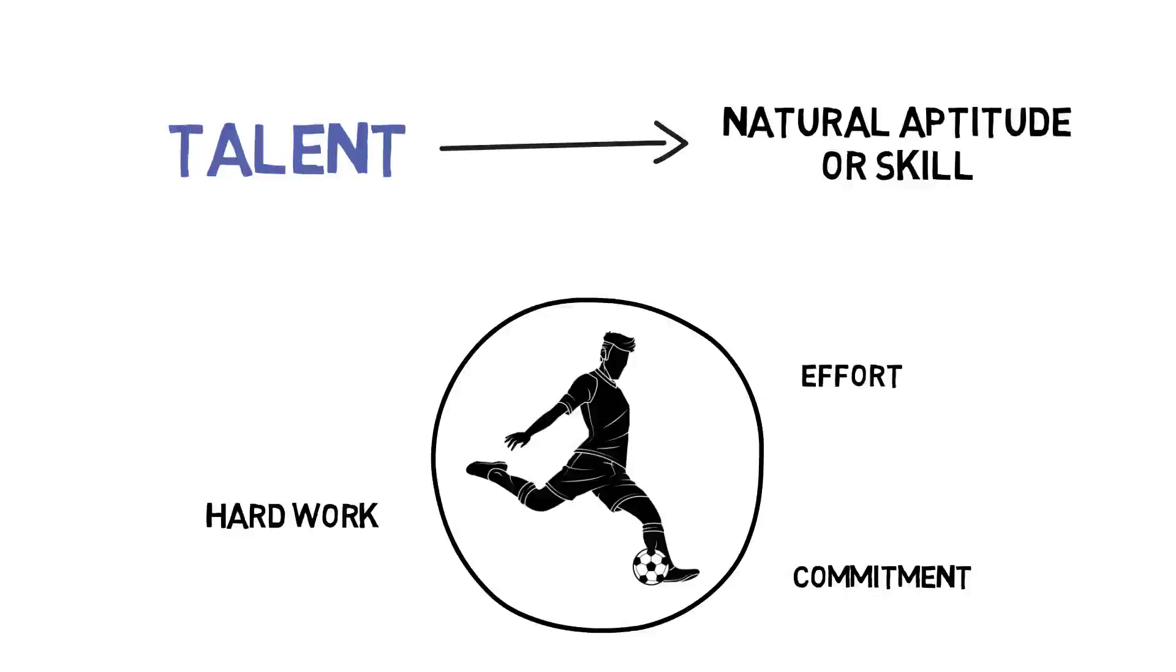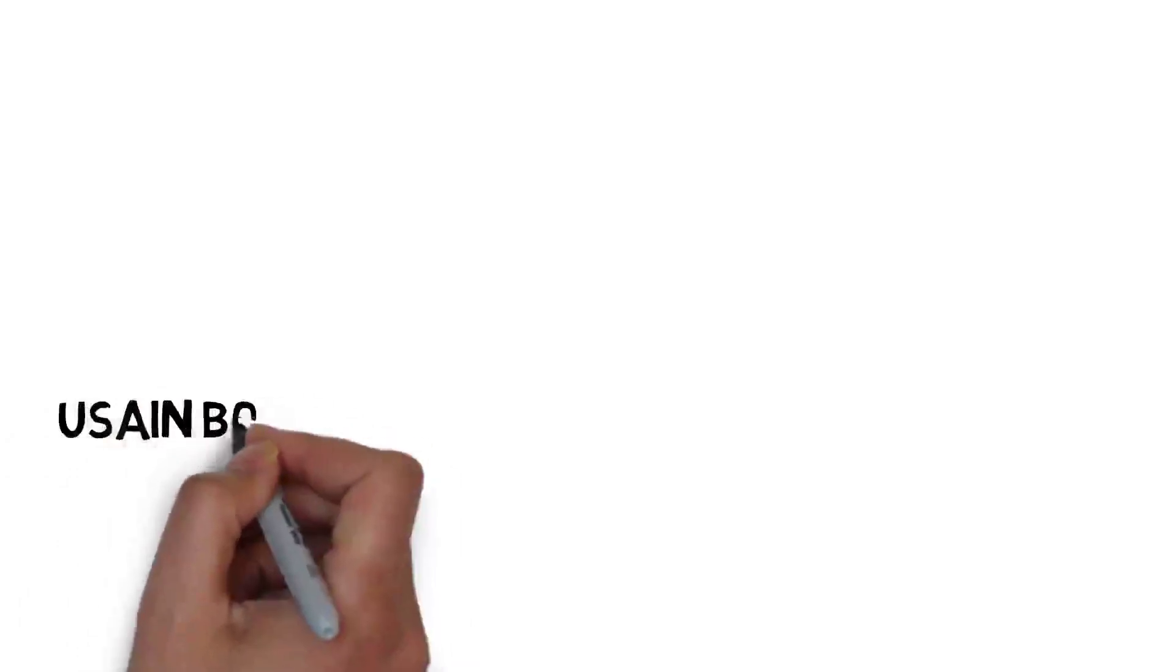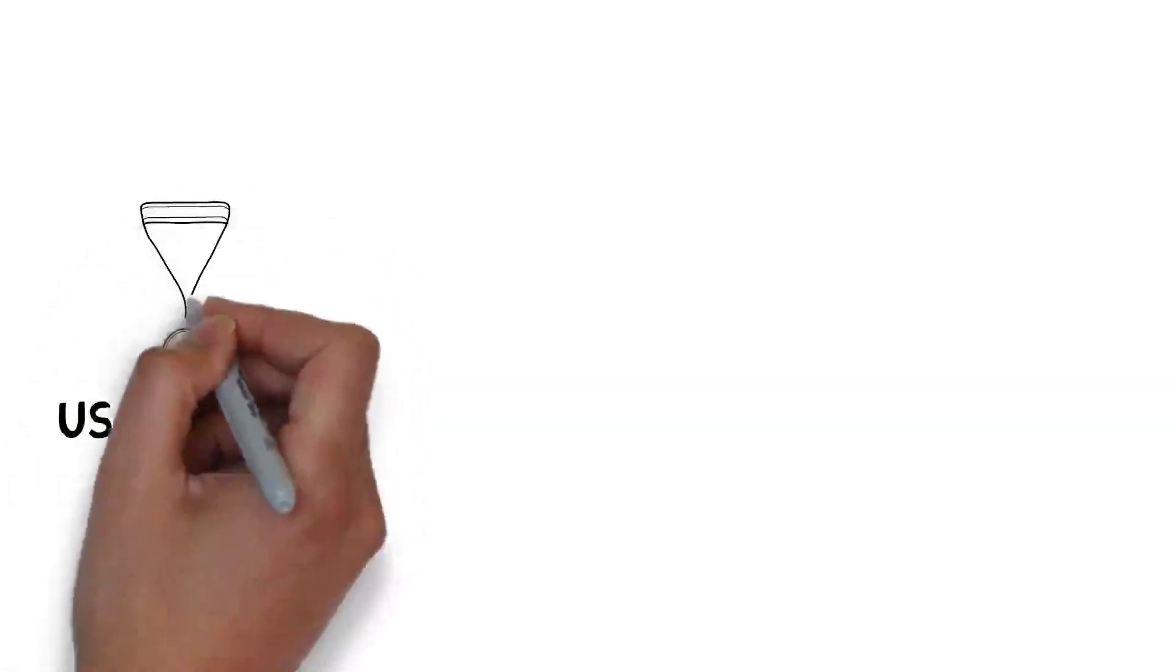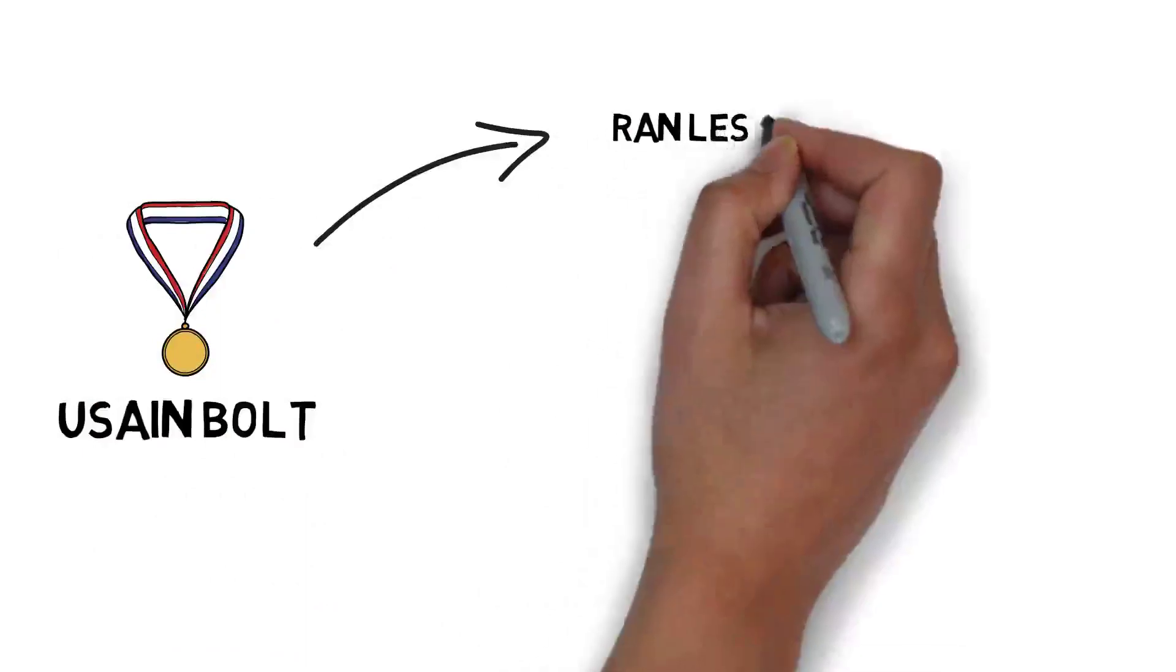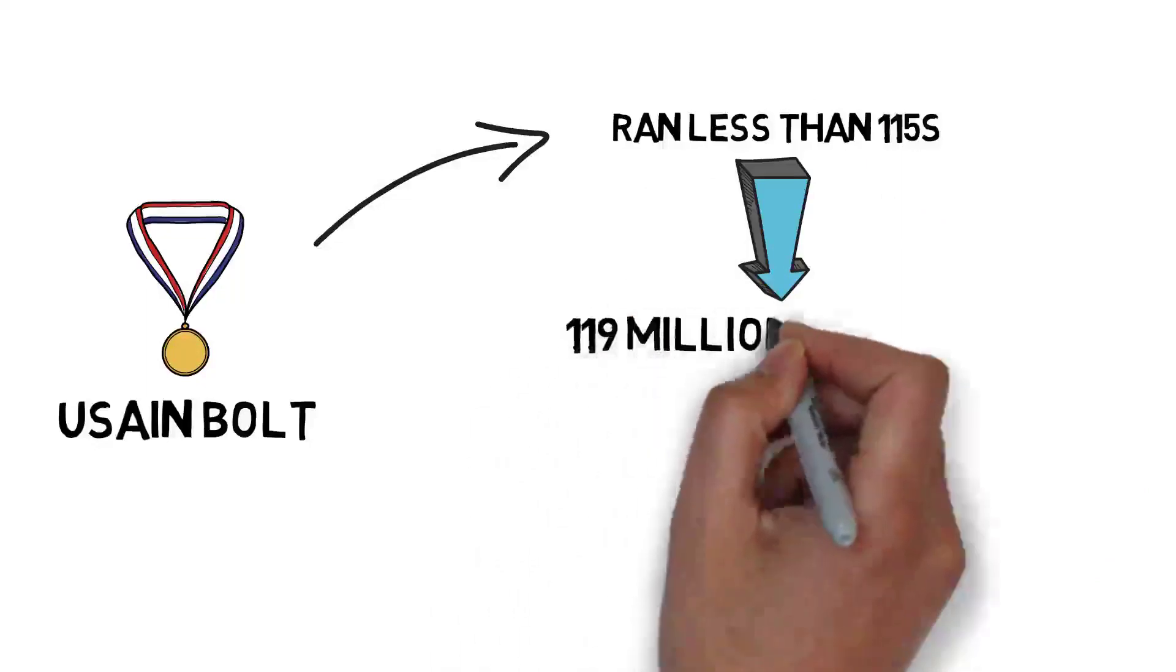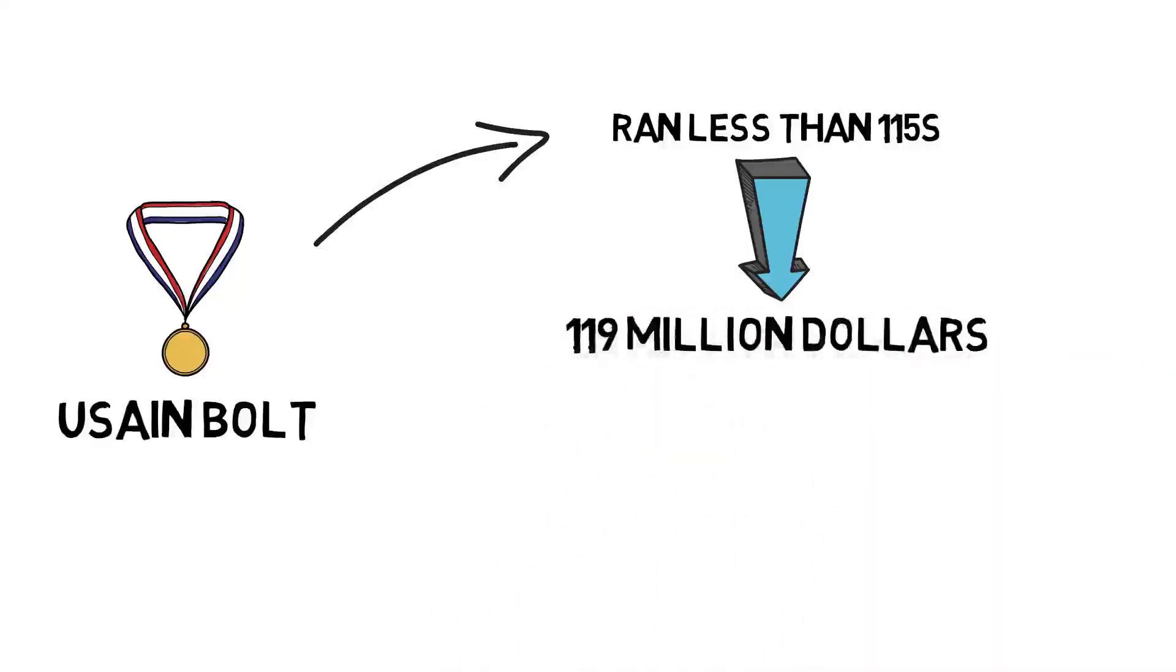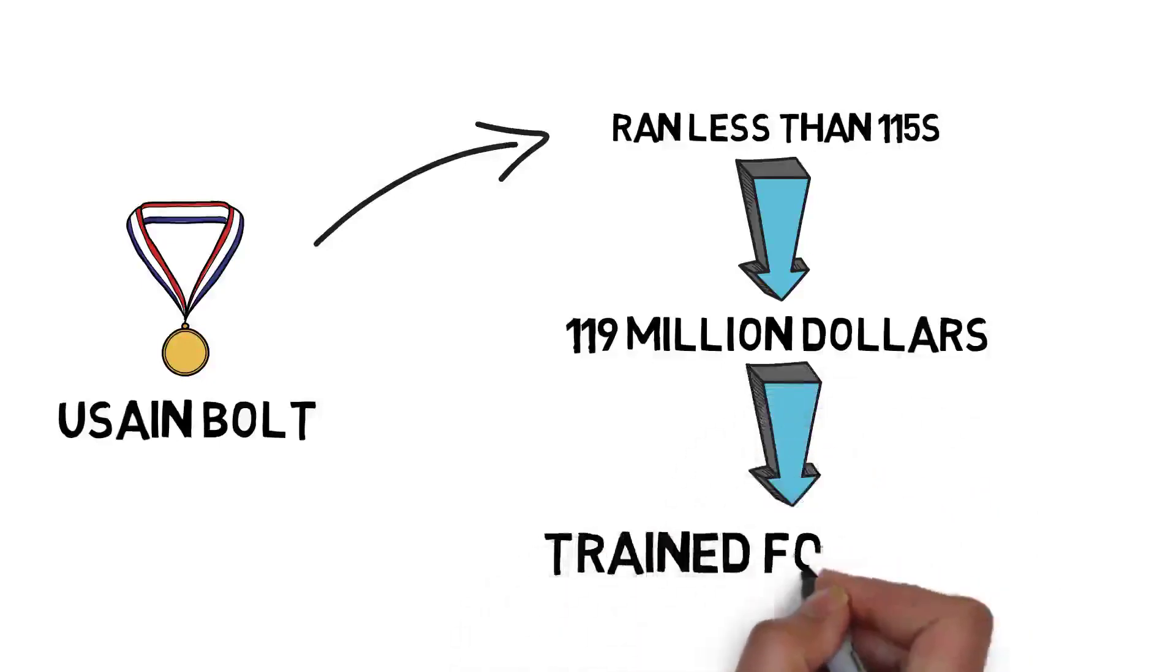You have two ways of seeing the life of an athlete. Usain Bolt has won nine gold medals in his three Olympic Games and he has run for less than two minutes on the track. He ran for less than 115 seconds in total in Olympic Games history and made $119 million. However, for those 115 seconds, he trained for more than 20 years.